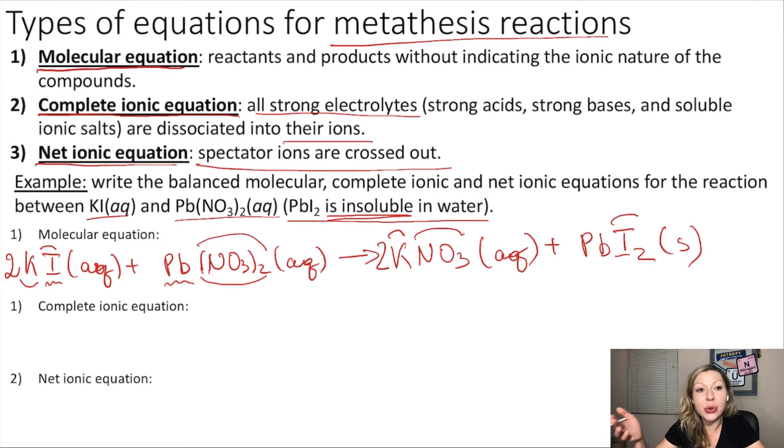Now what do we do in a complete ionic equation? We have to show all strong electrolytes in their ionic form. Everything that is soluble in water has to be shown as an ion. So we start with KI, so two potassium ions, which are aqueous, plus two iodide ions, which are also aqueous.